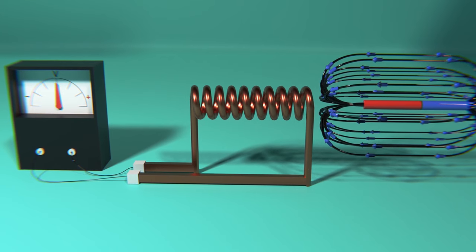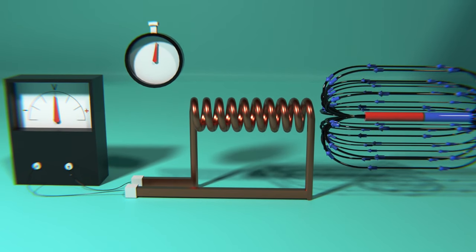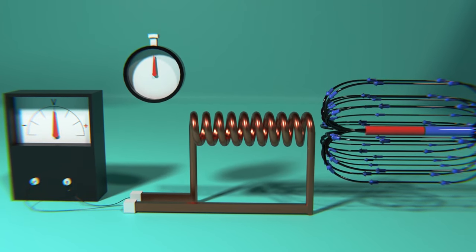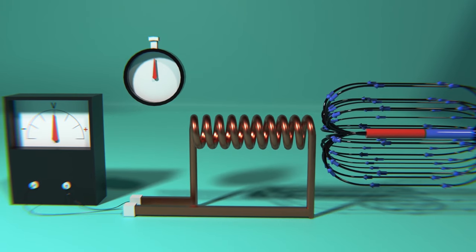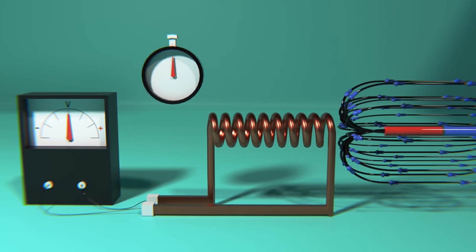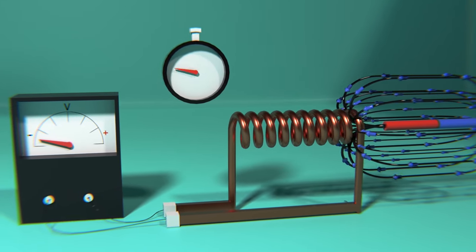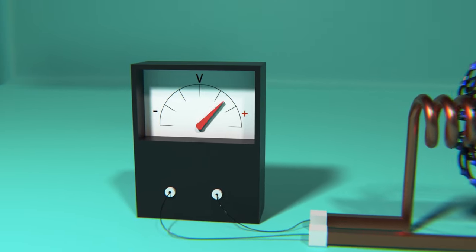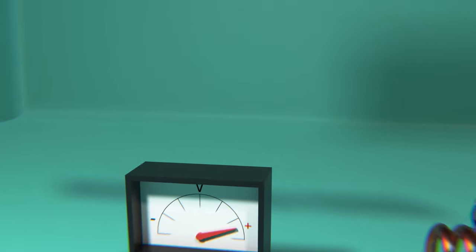Going back to our initial experiment: what happens if we have a coil connected to a voltmeter and leave the magnet in a static position for three seconds? Exactly — nothing happens, because the formula requires a variation of the magnetic flux over time, and since the magnet was always in the same place, there was no variation. But what if we bring the magnet closer during those three seconds? A voltage difference is generated. Move it to the other side, and the sign reverses. If we repeat the cycle, what is happening is that an alternating current is being generated.